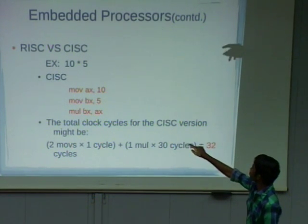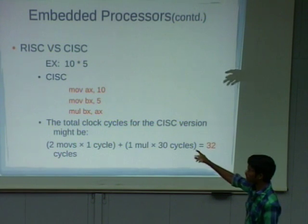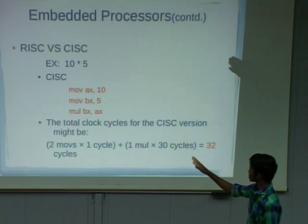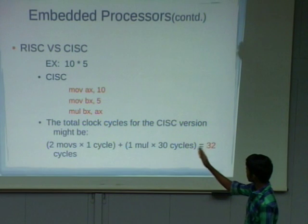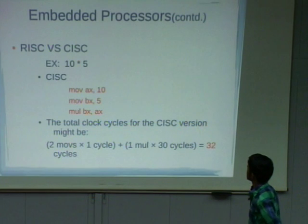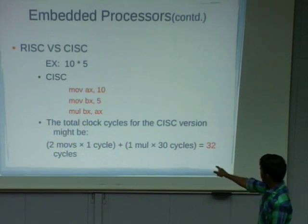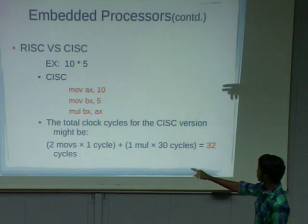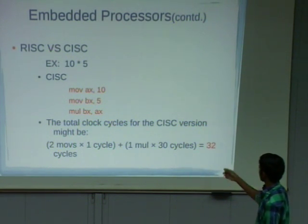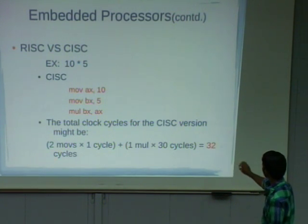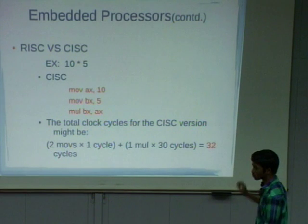Let us take an example. To multiply two numbers, 10 times 5, in CISC-based processors we move 10 into some register, then move 5 into another register, then apply a multiplication operation on both registers. One cycle for each move — that means two cycles — and multiplication takes more cycles than addition. The total number of cycles for this operation is 32.